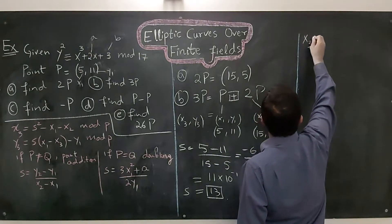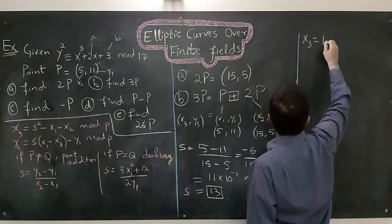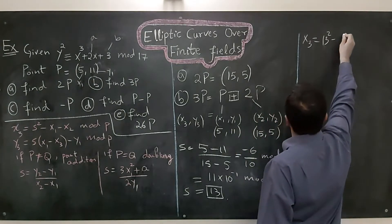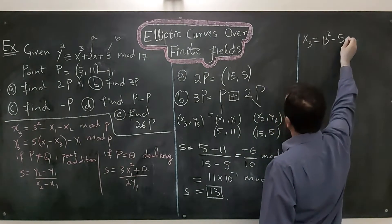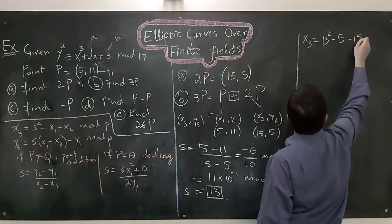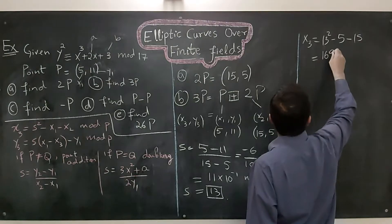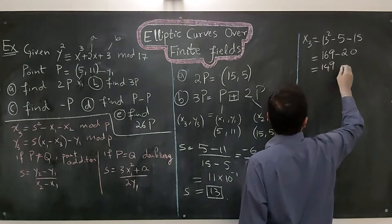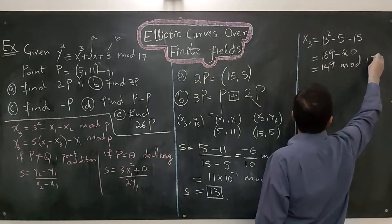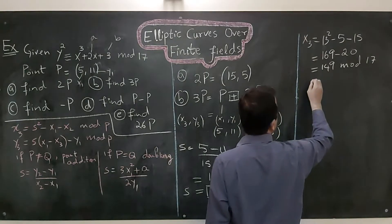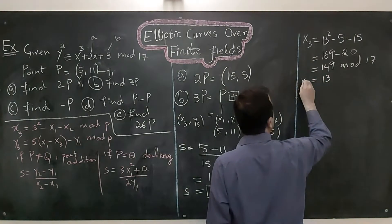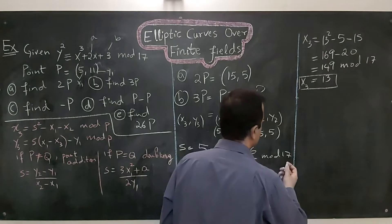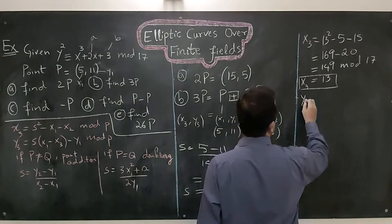Using the slope, x3 = s² - x1 - x2 mod 17 = 13² - 5 - 15 mod 17. Wait — the slope was computed as 13 mod 17. So 13² = 169, minus 20 = 149, and 149 mod 17 = 13. So x3 is 13.